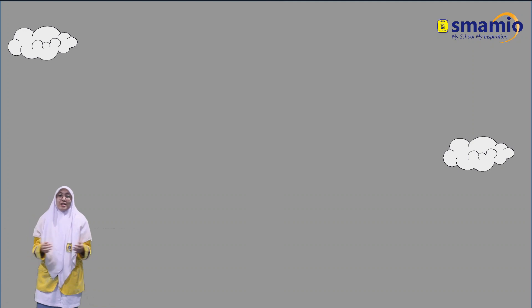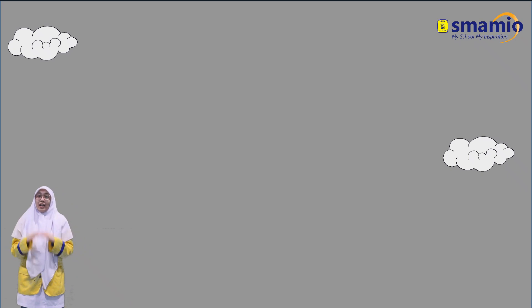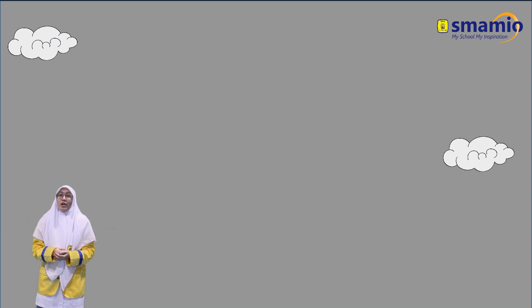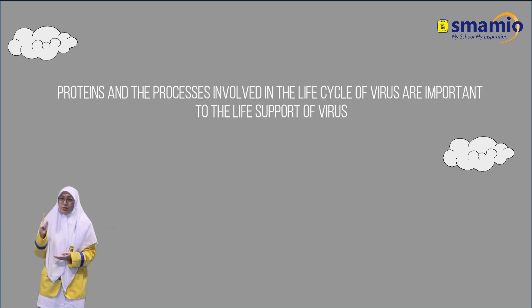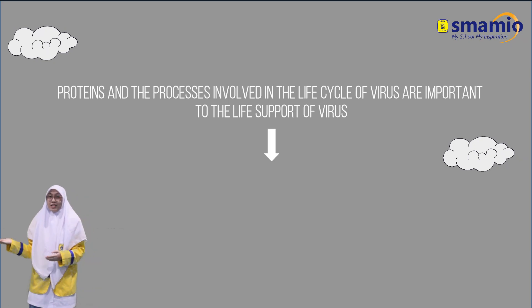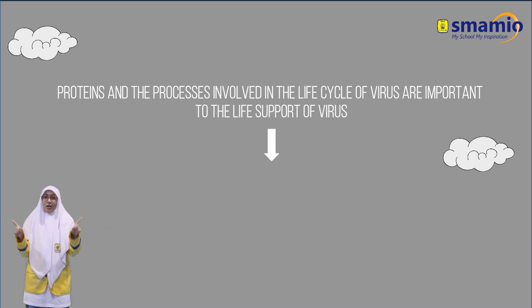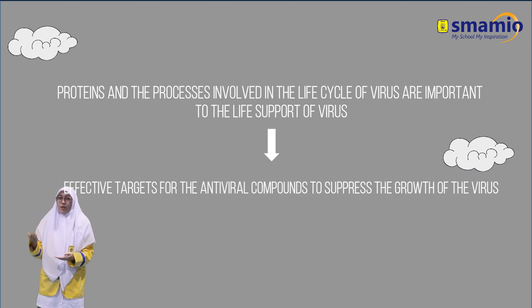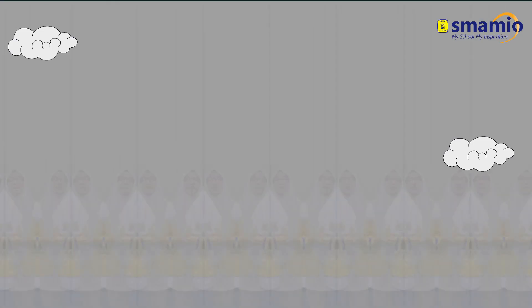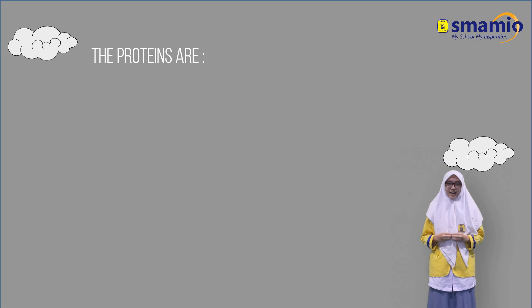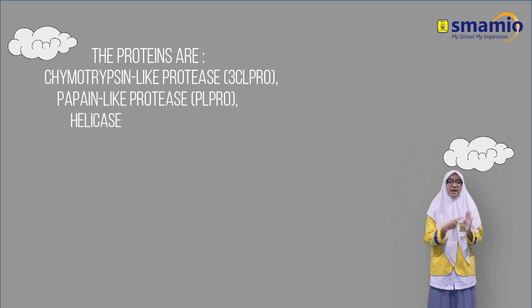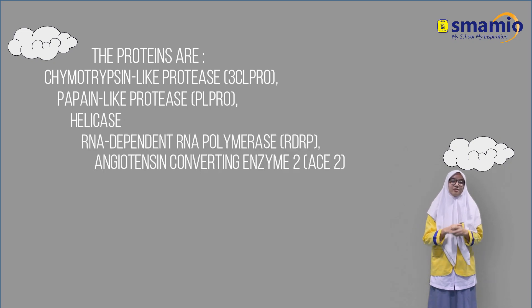SARS-CoV-2 is the virus responsible for the current COVID-19 pandemic. The life cycle of this virus in the human body depends on several proteins which are the most important life support for the virus. Proteins and processes involved in the life cycle are effective targets for antiviral compounds to suppress viral growth. Proteins involved in the life cycle of SARS-CoV-2 include 3CL Pro, PL Pro, Helicase, RdRp, and ACE2 from the human body, which acts as the entry point for the virus.